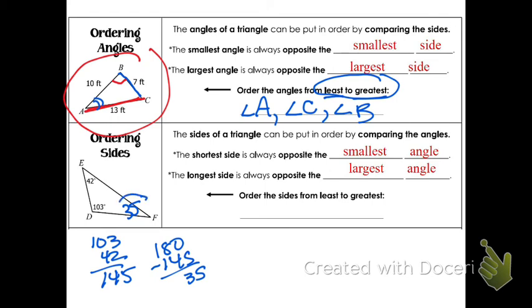Now list the sides from least to greatest. Well, the smallest angle is 35. So the smallest side is across from it. The next, the medium sized angle would be 42. Across from the 42 is this side, DF. And last, the largest angle is 103. Across from that is EF. That's it. That's how it works. Pretty straightforward.